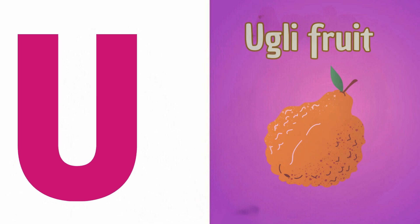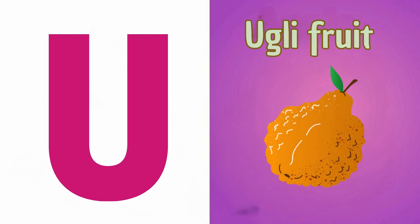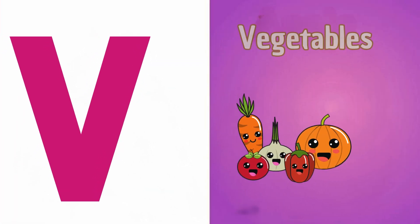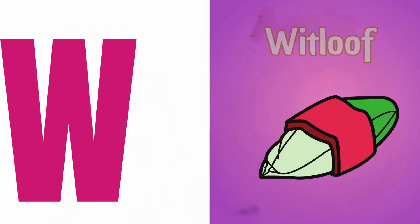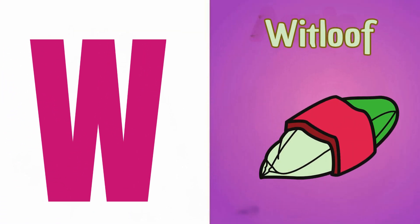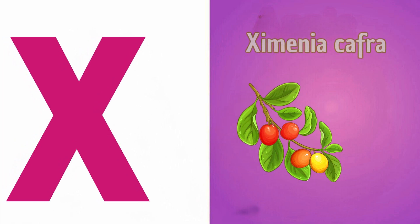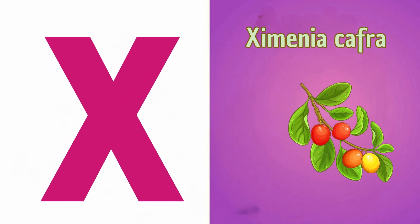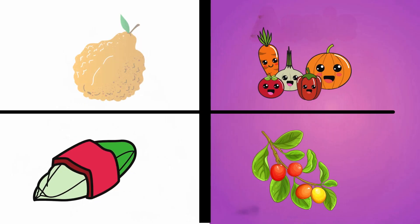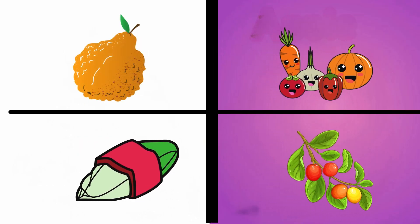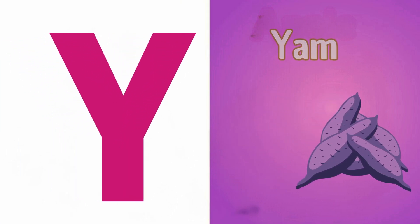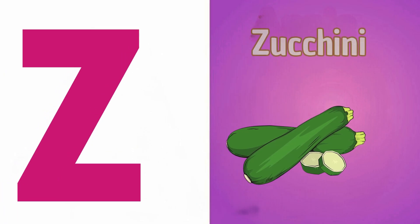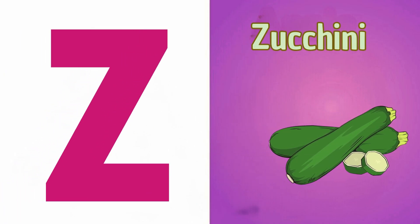U is for Ugly Fruit, Ugly Fruit. V is for Vegetables, Vegetables. W is for Witloaf, Witloaf. X is for Ximenia, Ximenia. Y is for Yam, Yam. Z is for Zucchini, Zucchini.